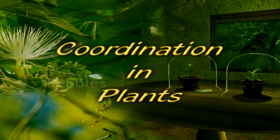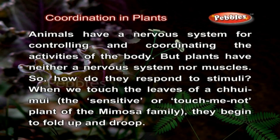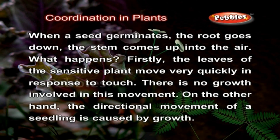Coordination in plants. Animals have a nervous system for controlling and coordinating the activities of the body, but plants have neither a nervous system nor muscles. So, how do they respond to stimuli? When we touch the leaves of a chui mui, the sensitive or touch-me-not plant of the mimosa family, they begin to fold up and droop. When a seed germinates, the root goes down and the stem comes up into the air.